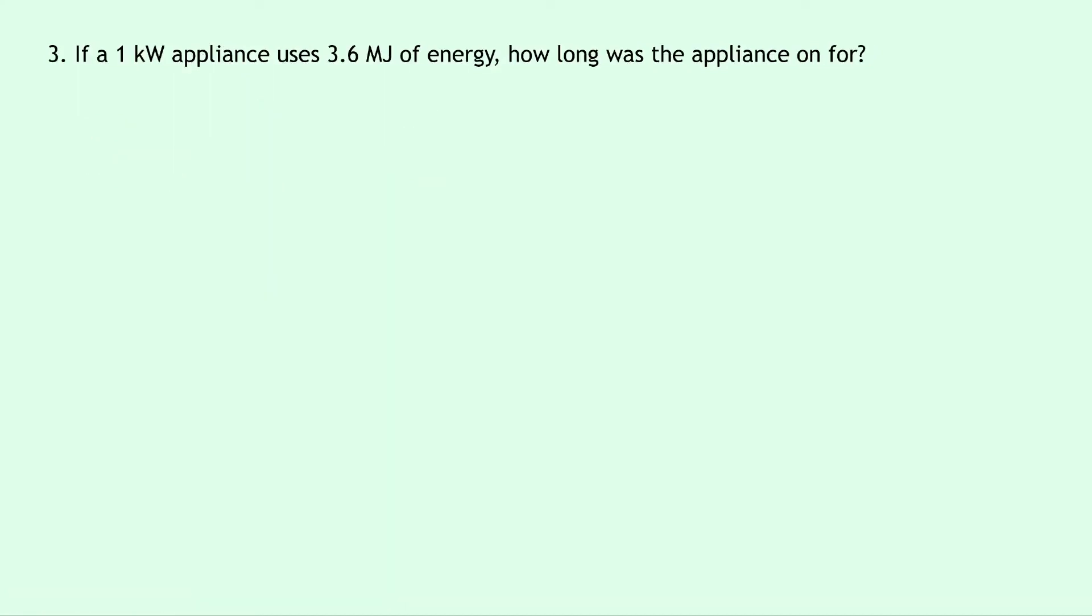Lastly, question 3 says that if a 1 kilowatt appliance uses 3.6 megajoules of energy, how long was the appliance on for? So it's asking us for a time, and notice again we've got prefixes in our values, so this is good practice of prefixes.